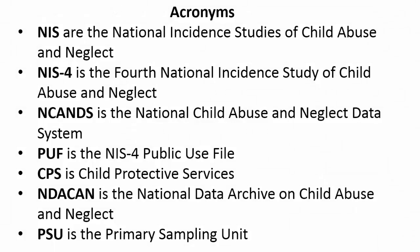In this tutorial, we use these acronyms. NIS are the National Incident Studies of Child Abuse and Neglect. NIS-4 is the fourth study. NCANS is the National Child Abuse and Neglect Data System. PUF is the NIS-4 public use file. CPS is Child Protective Services. NDACAN is the National Data Archive on Child Abuse and Neglect. And PSU is the Primary Sampling Unit.